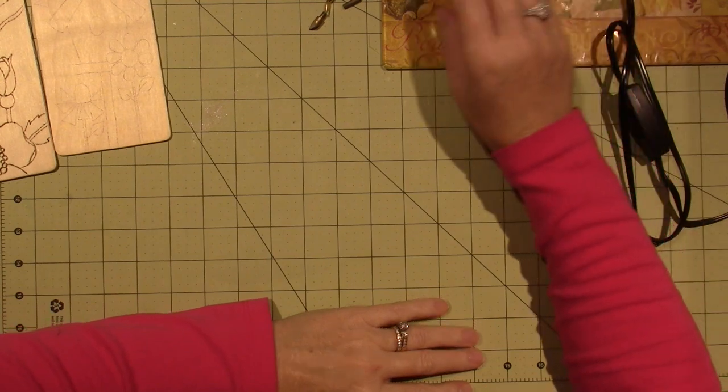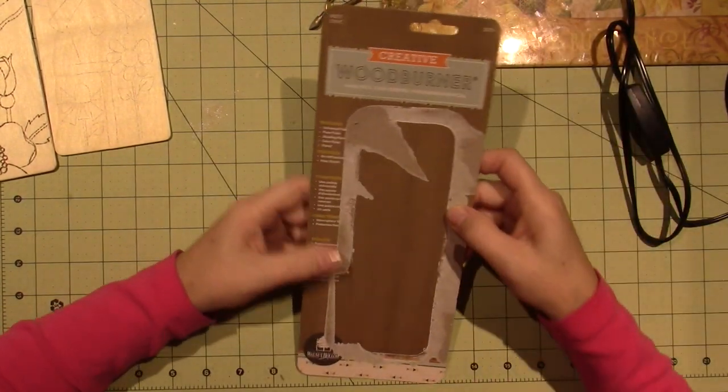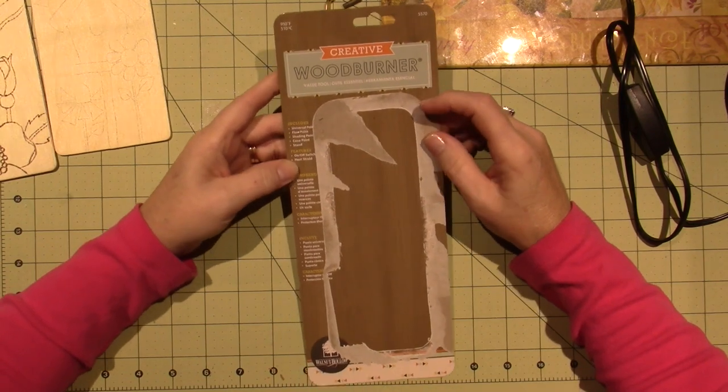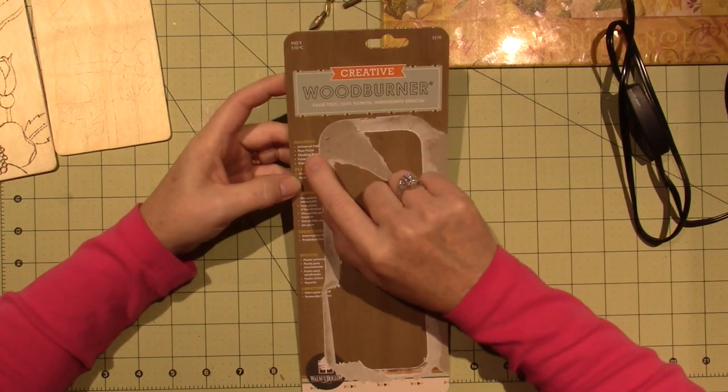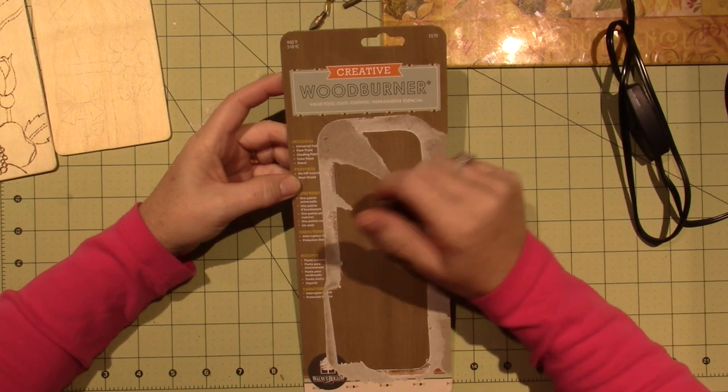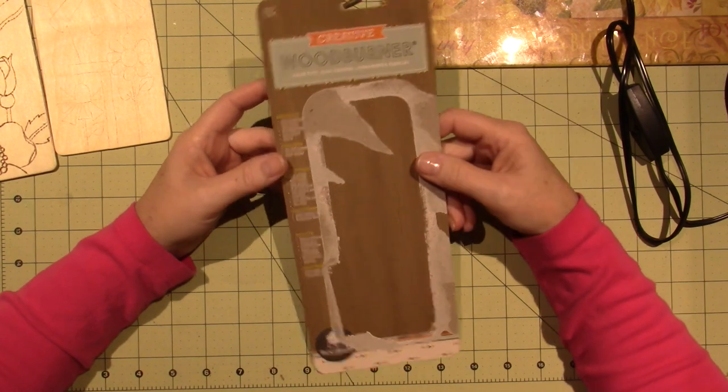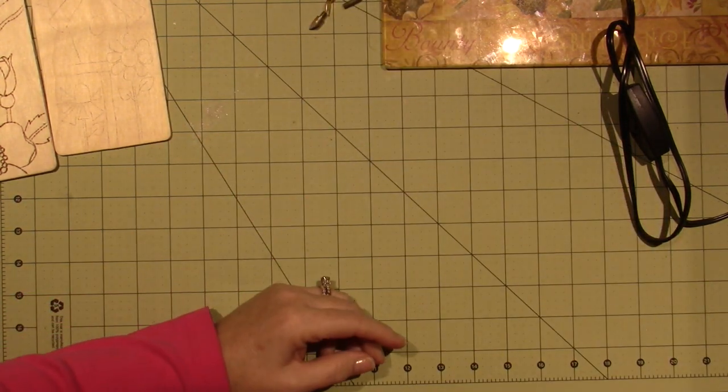I went and got this one today. This is the other option that they had. It's just called the Creative Woodburner, again, by Walnut Hollow, and it came with four tips as well. I used a 40% off coupon. I think it came to around $7, which was nice.